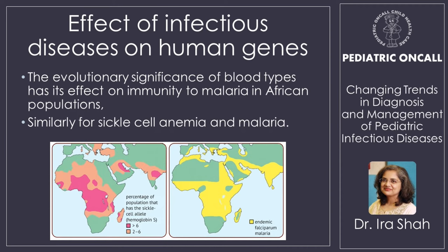Infectious diseases have also changed our genetic makeup. Falciparum malaria and sickle cell anemia are closely linked — sickle cell anemia is supposed to be protective, and you can see that the belt of falciparum is the same as the belt of sickle cell anemia. So infectious disease has actually led to changes in our genetic pattern as well.